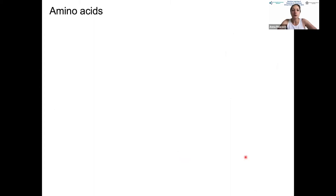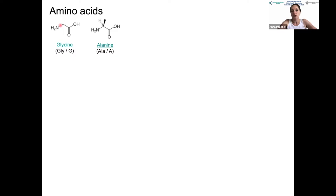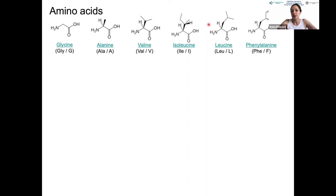Breaking down to the basic building blocks, we have amino acids. Take alanine: it has a primary amine as the N-terminus, a carboxylate as the C-terminus, and the amino acid is defined by its side chain substituent—in alanine's case, a methyl group. Each amino acid has a full name, a three-letter abbreviation, and a single-letter abbreviation. Glycine is the only achiral analog with two hydrogens at the alpha carbon, making it extremely flexible, while branched hydrophobic side chains like valine, isoleucine, leucine, and phenylalanine are more rigid.